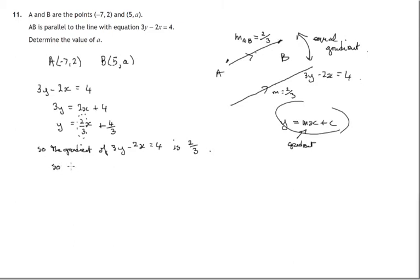Because they're parallel. So since AB is parallel to this line, then the gradient of AB will also be 2/3.